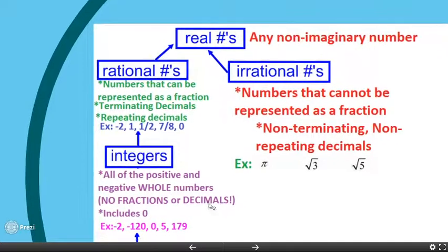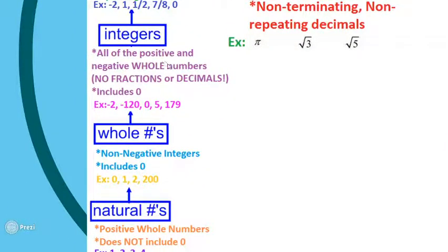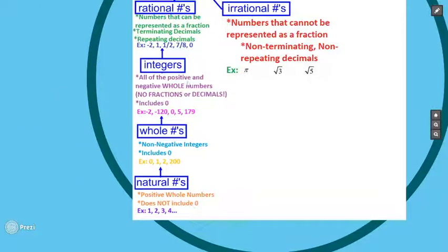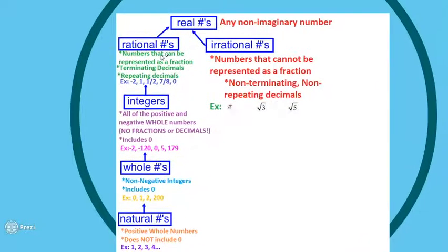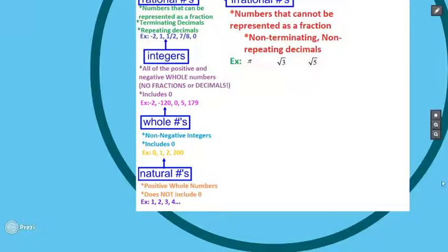Rational numbers break down into even more categories. The next big category is integers — all positive and negative numbers that do not contain fractions or decimals. It also includes zero. So it's all the negatives, all the positives, and zero without fractions or decimals. Examples: negative 2, negative 120, 0, 5, and 179. The arrows on the chart show that if something is an integer, it's also rational and also real — just follow the flow chart upward.